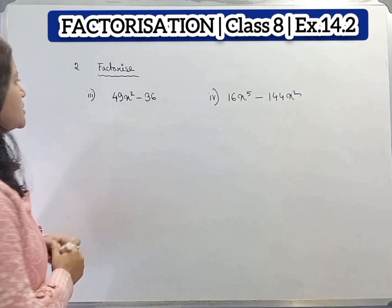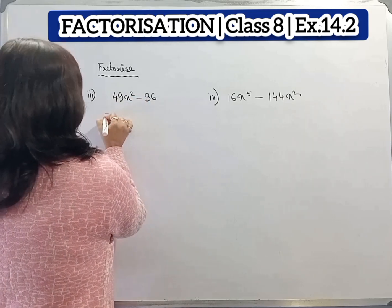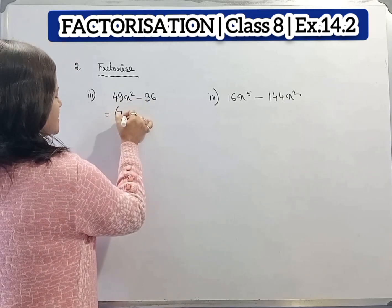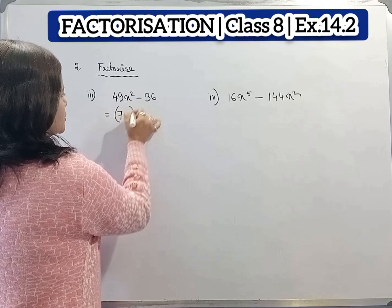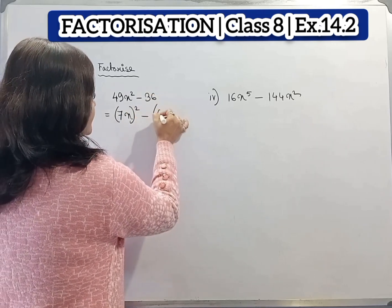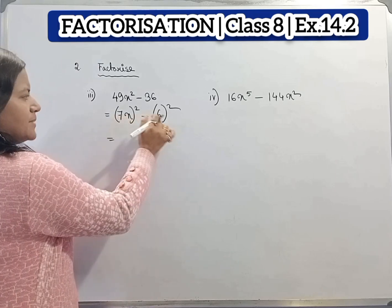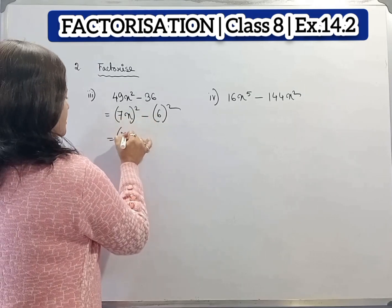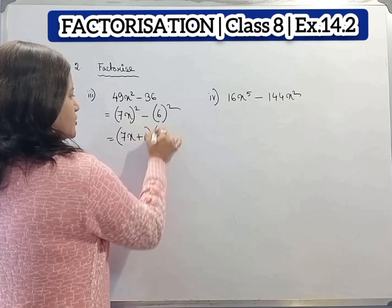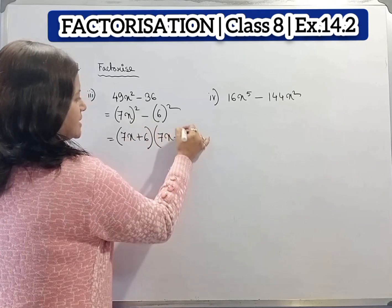Now third question: 49x square minus 36. 49x square we can write as 7x whole square, minus 36 we can write as 6 whole square. So applying a square minus b square equals a plus b into a minus b — that is 7x plus 6 into 7x minus 6.